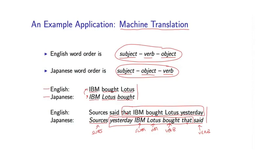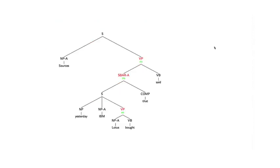Basically this kind of reordering has been applied recursively in a sentence. So if you're trying to model differences in word order between English and Japanese, it can be quite difficult because of the complexities shown in the previous slide.